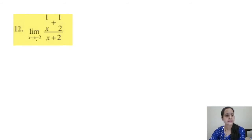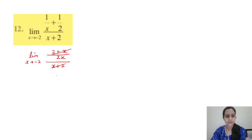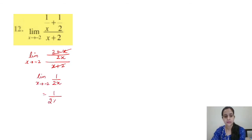Question 12: limit x tends to −2, (1/x + 1/2)/(x + 2). Direct substitution gives 0, so simplify first. Taking LCM in the numerator: (2 + x)/(2x), divided by (x + 2). The (x + 2) and (2 + x) cancel. We get 1/(2x). Substituting x = −2: 1/(2×(−2)) = −1/4. The answer is −1/4.